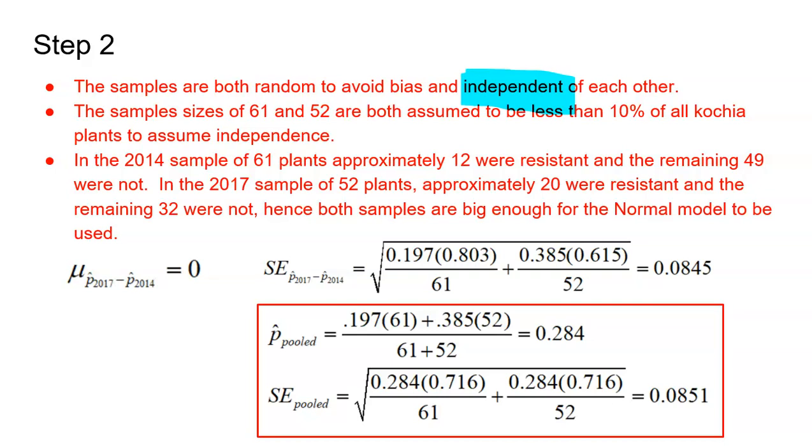In 2014, the sample of 61 plants had approximately 12 that were resistant. I took 61 plants and multiplied it by the 19.7% that were resistant in 2014. And that means the remaining 49 were not resistant. The point is both of those numbers are 10 or larger. In 2017, I had 52 plants, and 0.385 or 38.5% of them were resistant. That's approximately 20, which means that 32 were not. Both of those numbers are larger than 10, so the normal model can be used.